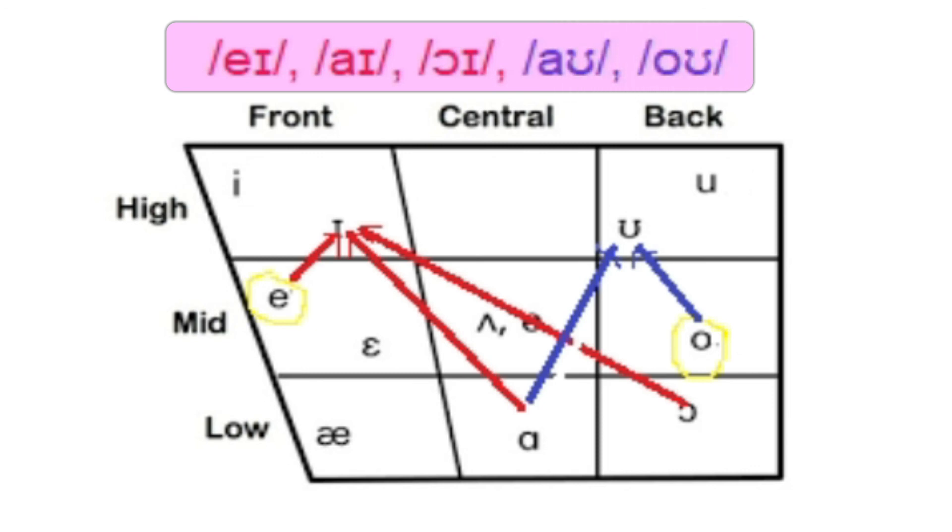We'll also learn composite vowels and R-colored vowels when appropriate. Regarding A and O, the first sounds in these diphthongs, E and O, do not occur on their own as a vowel phoneme in American English.